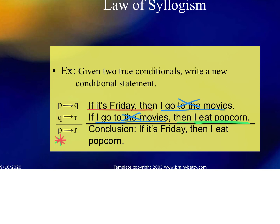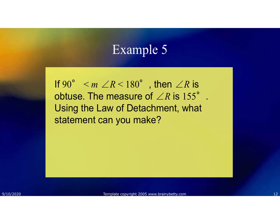Let's try an example using the law of detachment. The conditional is: if 90° < measure of angle R < 180°, then R is obtuse. They state the measure of R is 155°. Because 155 fits into that inequality — it's between 90 and 180 — I can conclude that R is obtuse.